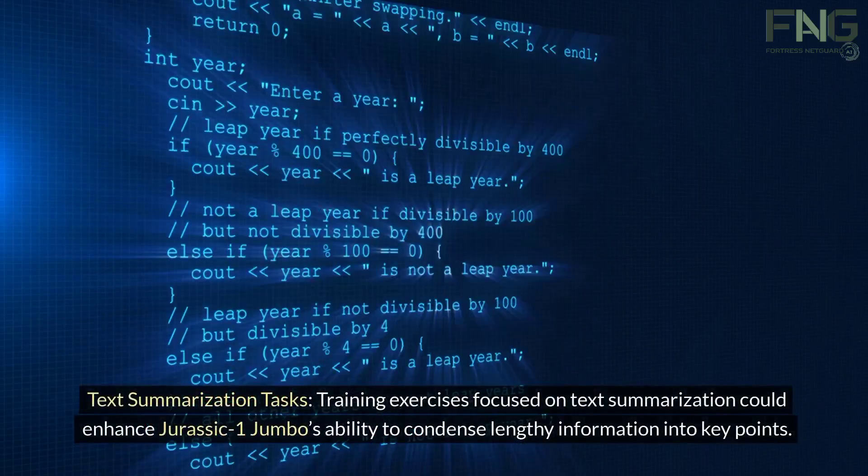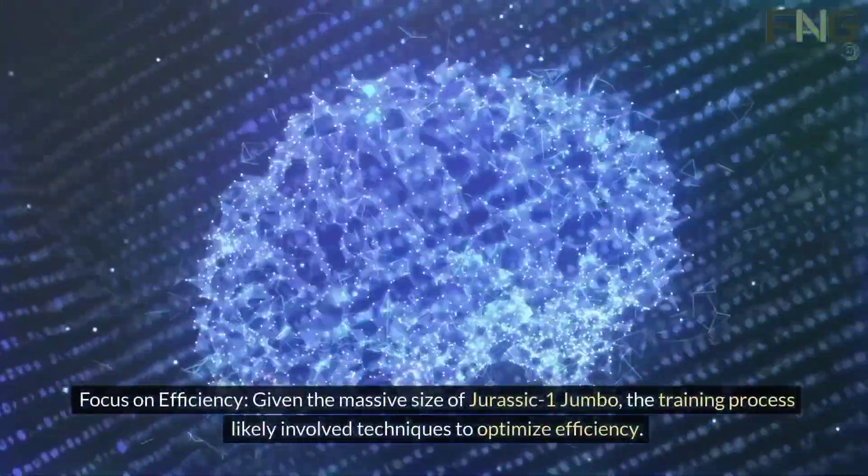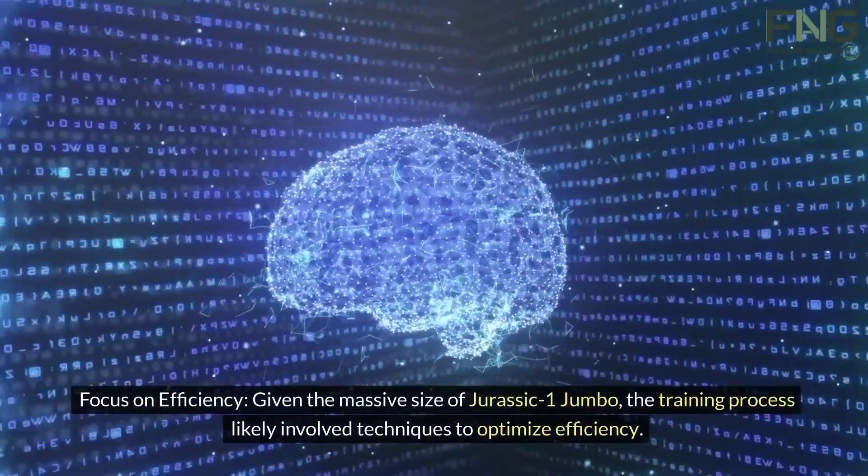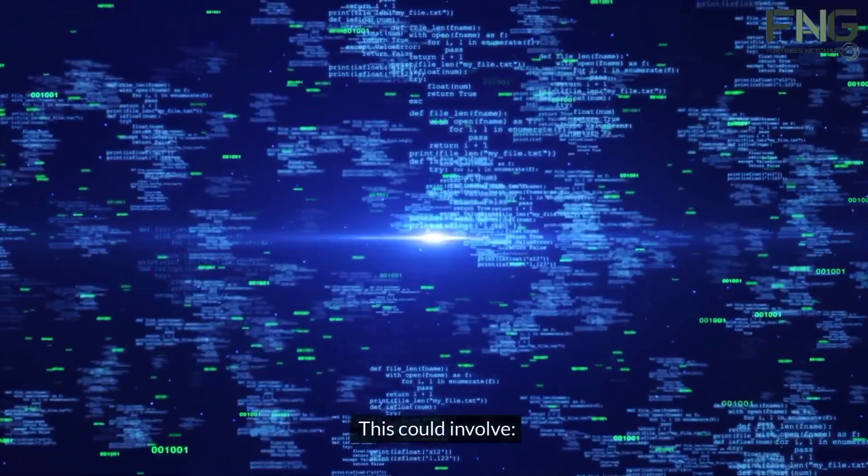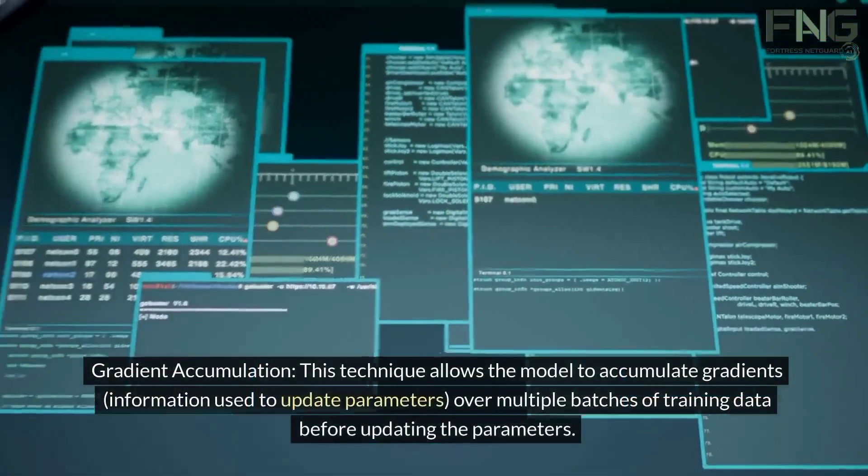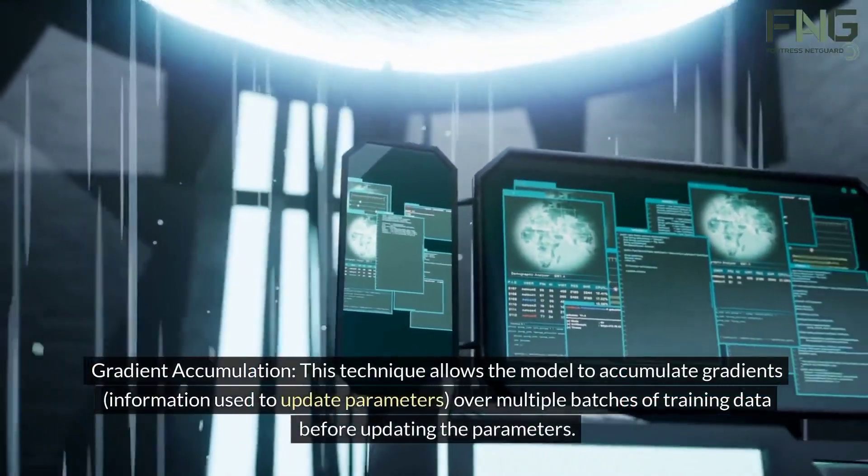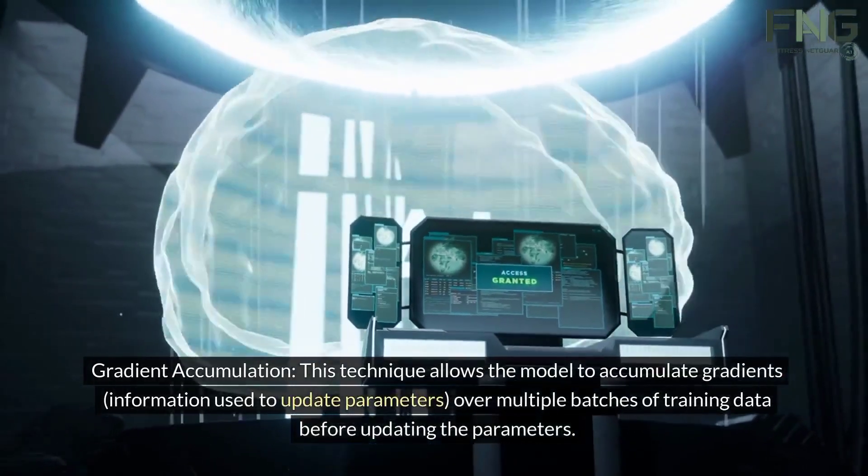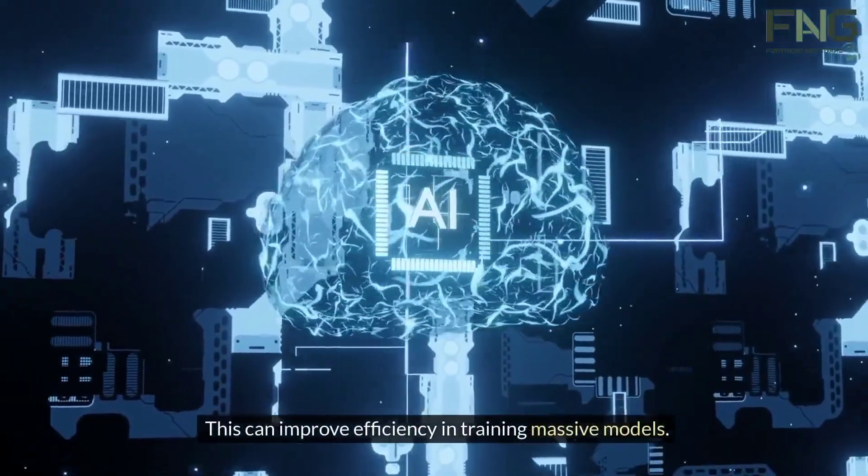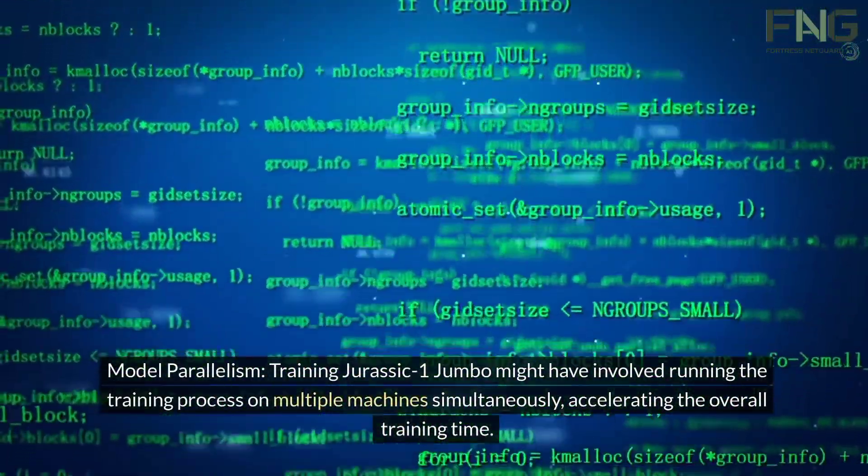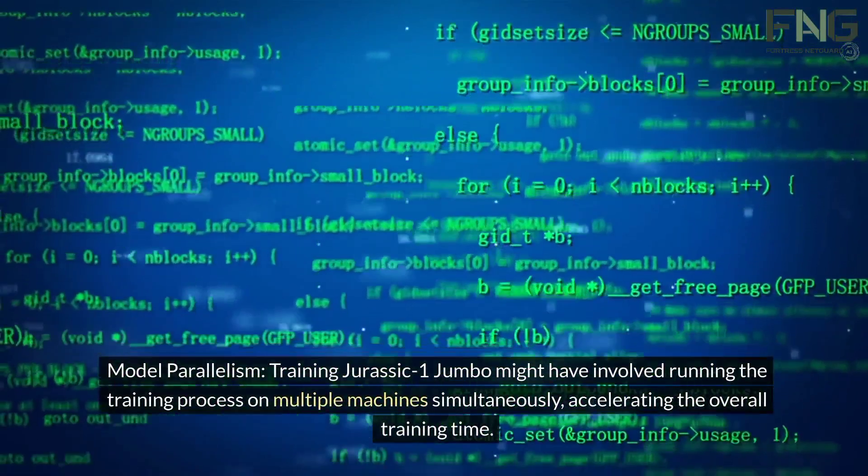Focus on efficiency: Given the massive size of Jurassic-1 Jumbo, the training process likely involved techniques to optimize efficiency. This could involve gradient accumulation—this technique allows the model to accumulate gradients (information used to update parameters) over multiple batches of training data before updating the parameters. This can improve efficiency in training massive models. Model parallelism: Training Jurassic-1 Jumbo might have involved running the training process on multiple machines simultaneously, accelerating the overall training time.